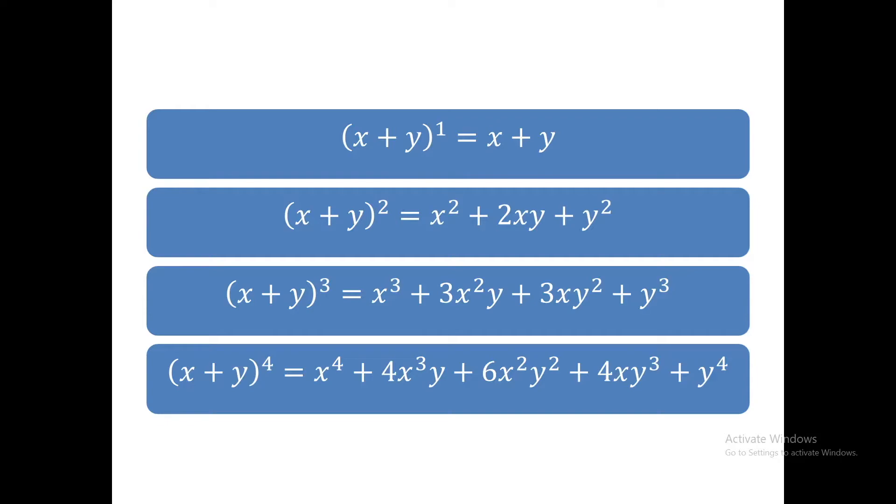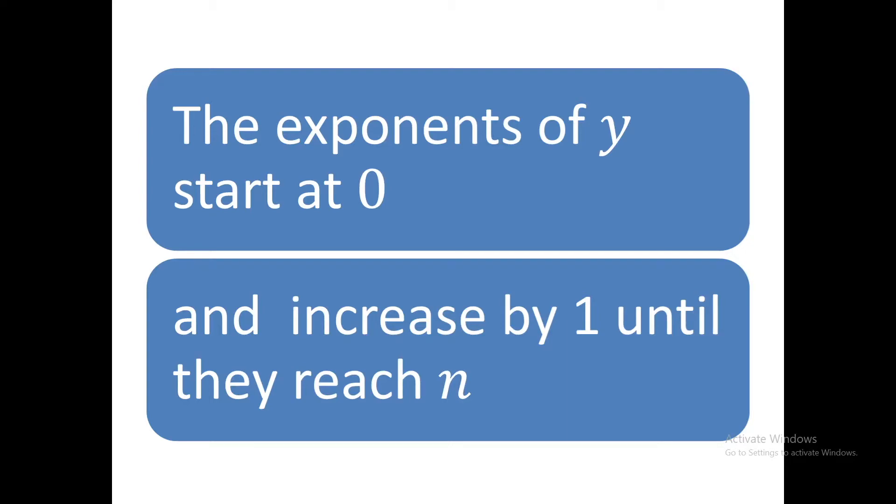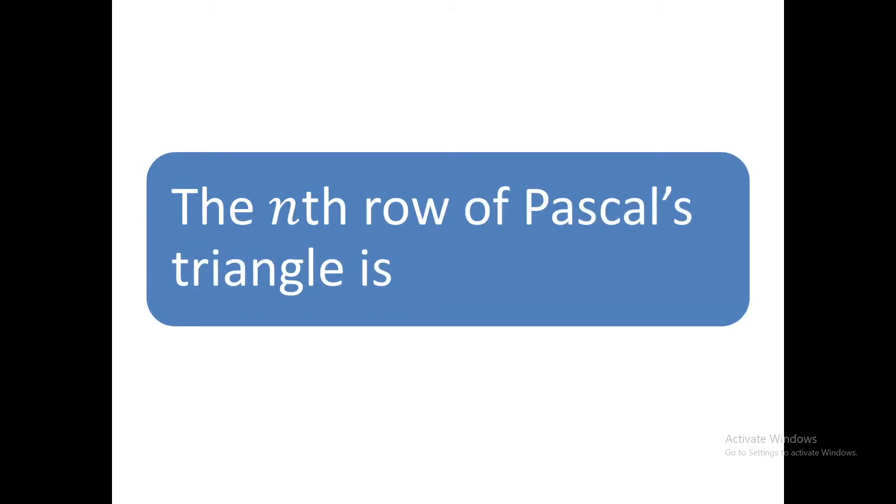We have all the expressions for 1, 2, 3, and 4 in one picture. There are several patterns that can be observed from these examples. The exponents of x start at n and decrease by 1 until they reach 0. Secondly, the exponents of y start at 0 and increase by 1 until they reach n.